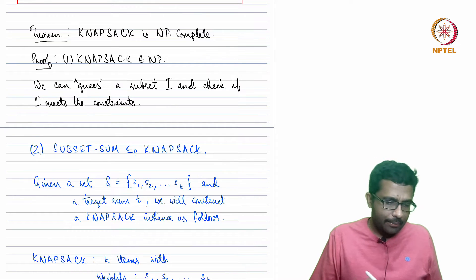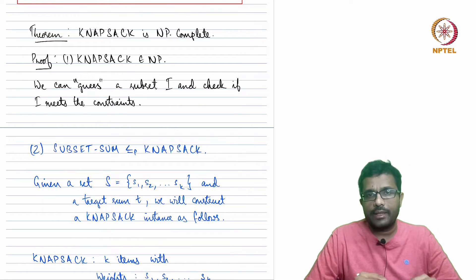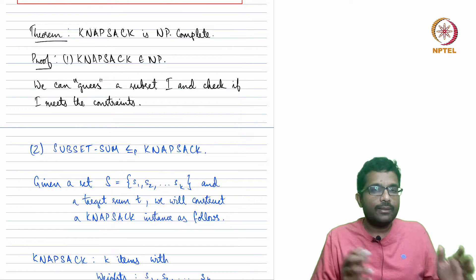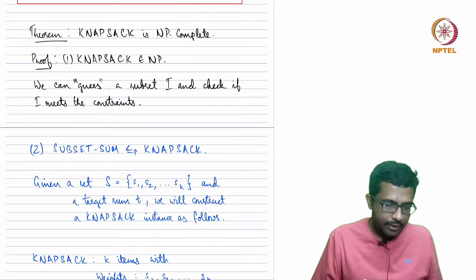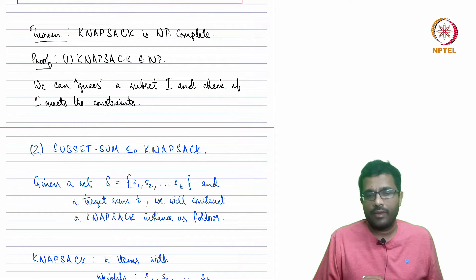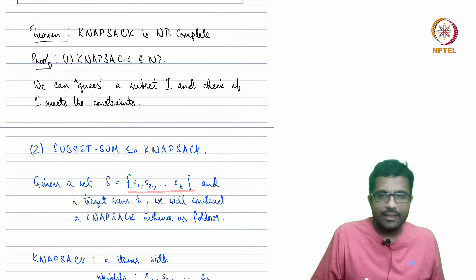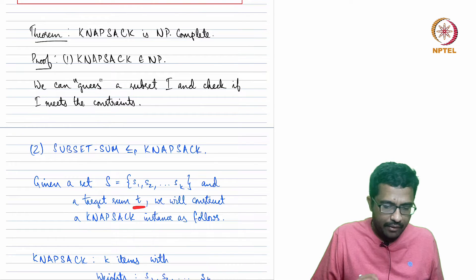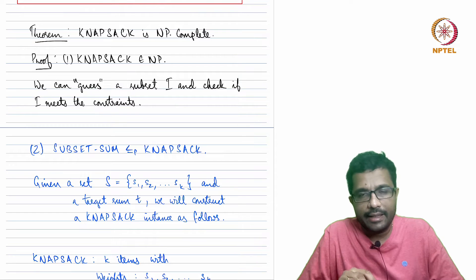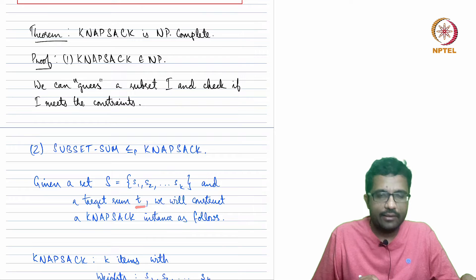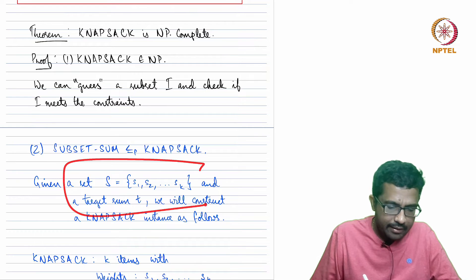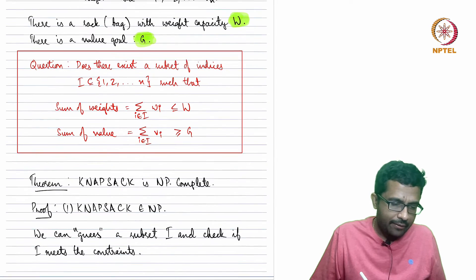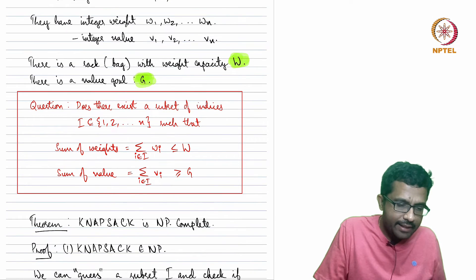This is also a general theme: when you want to show that a certain language is NP-complete, you try to look for problems that are similar and known to be NP-complete, as those usually yield easy reductions. Since Subset Sum is similar in flavor, we reduce from it. In Subset Sum, given a set S = {s1, ..., sk} and a target sum t, we want to know whether there is a subset of S whose elements sum to t.